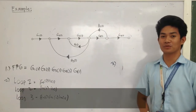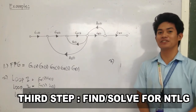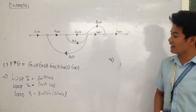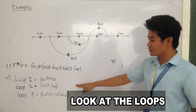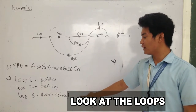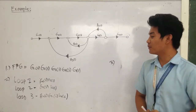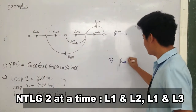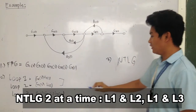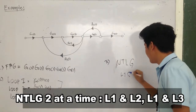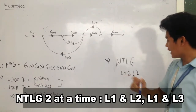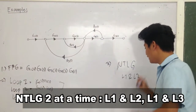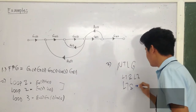The third step is to find the non-touching loop gains. We have three loops: Loop 1, Loop 2, and Loop 3. The non-touching loop gains taken two at a time are: Loop 1 and Loop 2, and also Loop 1 and Loop 3.